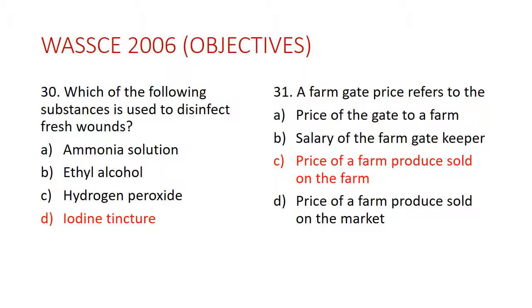Question 30: Which of the following substances is used to disinfect fresh wounds? The answer is D — iodine tincture. Iodine tincture is one of the substances used to disinfect fresh wounds.